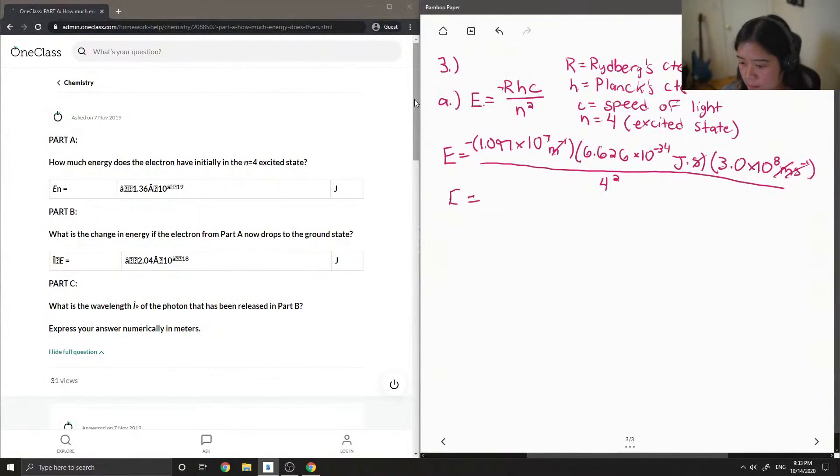and then we're left with an energy value of negative 1.363 times 10 to the negative 19 Joules, which is the same thing the person got there.